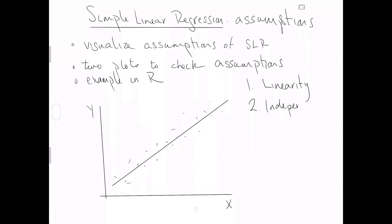The second assumption is independence. We don't want any two observations to be inherently related to each other in some meaningful way. We really want a completely independently, randomly sampled data set — no two observations like siblings, best buddies, people working at the same company, or cell lines from the same genome. For independence, that's nothing you can really visualize; you just have to think about how the data were collected.